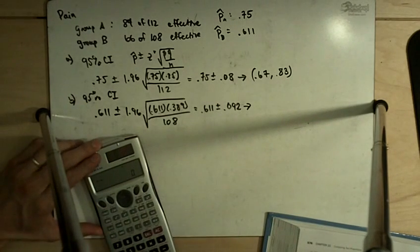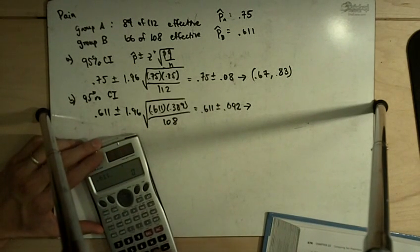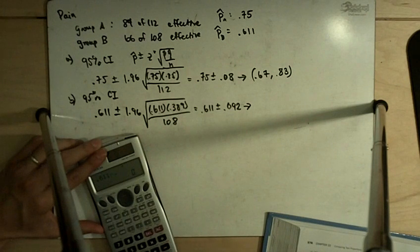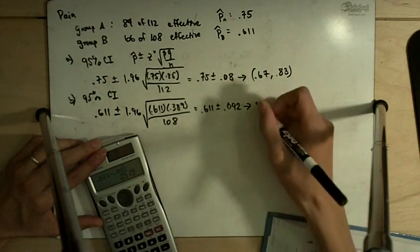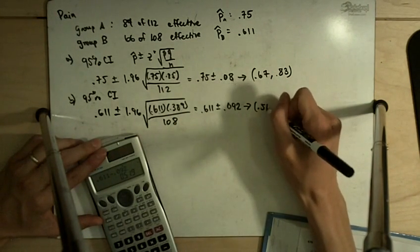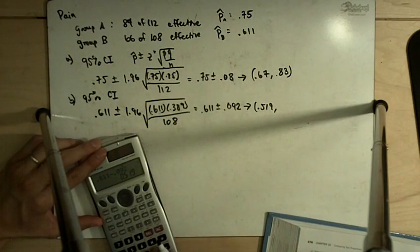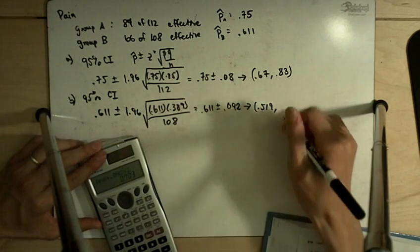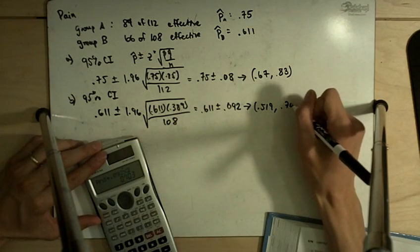And that gives me, on the lower end, 0.519. And on the upper end, 0.703.